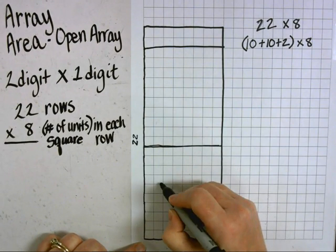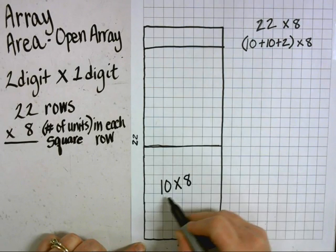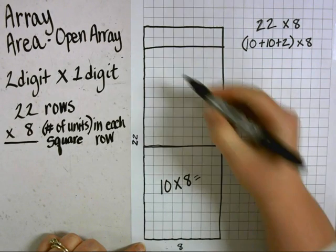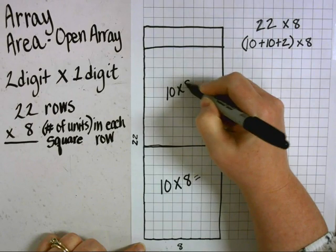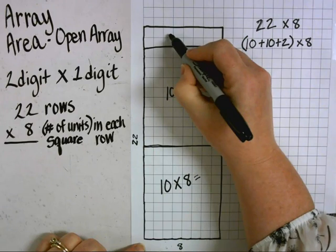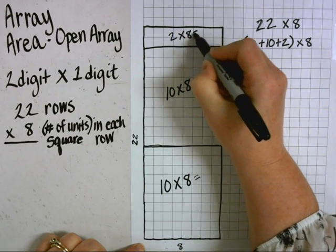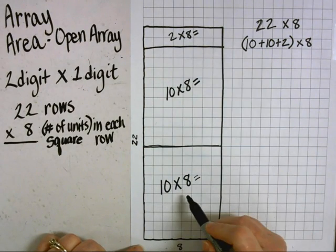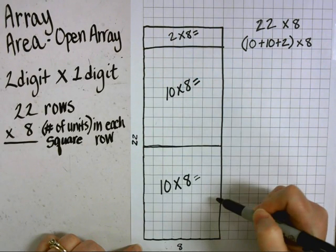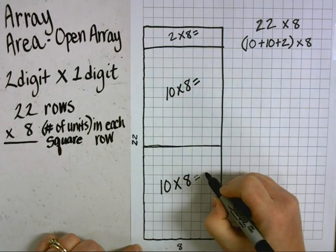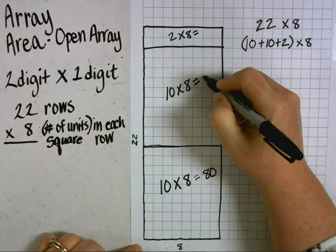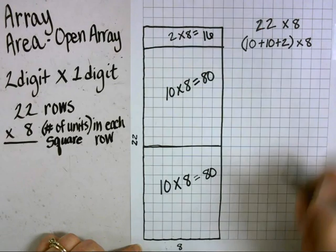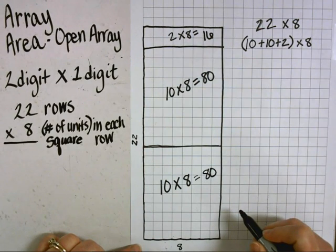I need to mark the smaller rectangles I've now created out of the larger 22 times 8 rectangle. This rectangle is a 10 by 8, or 10 times 8. I know that because I already broke it up into 10 rows and there are 8 in each row. This one again is 10 times 8. And this one is 2 rows times 8 in each row. Now that I've labeled each one of the rectangles, I can quickly multiply those because I know those facts — I don't have to count by ones or repeatedly add groups of 8.